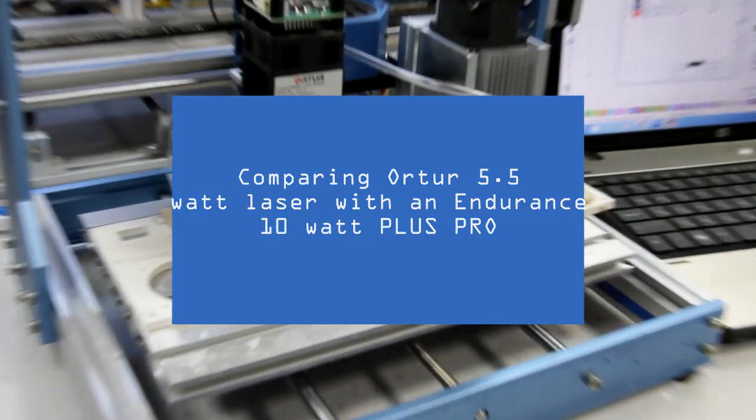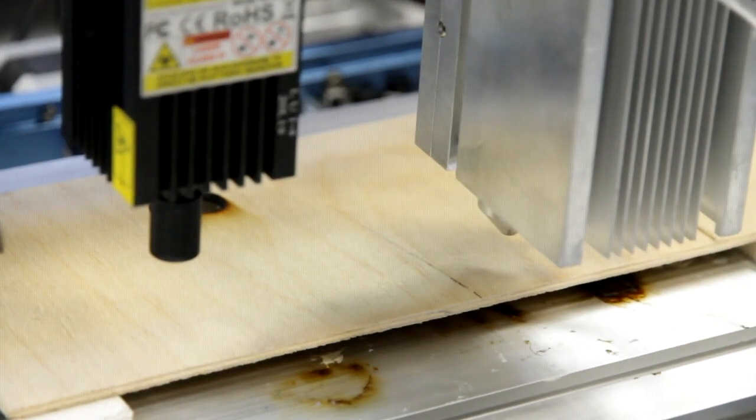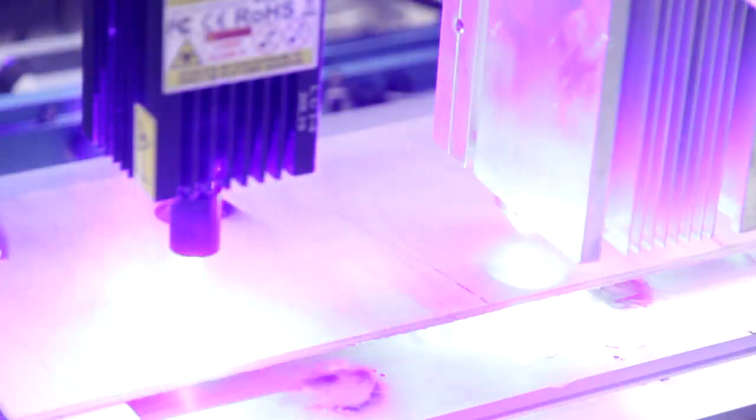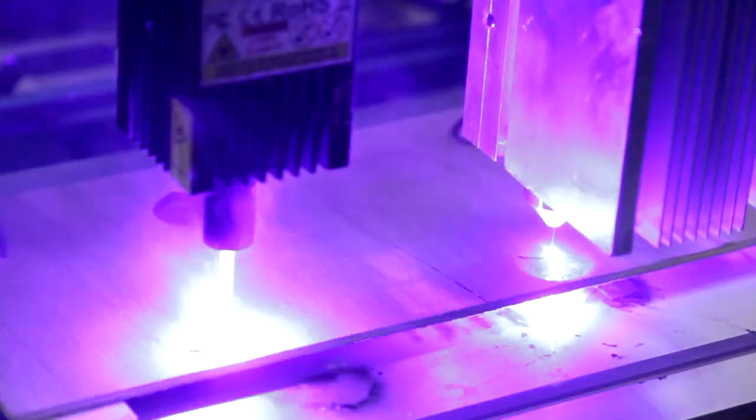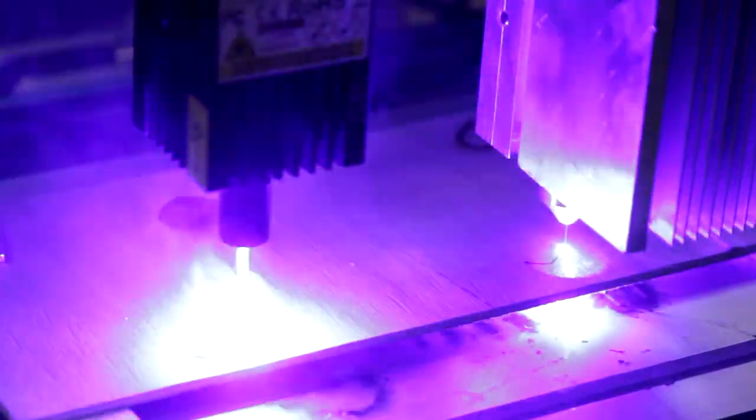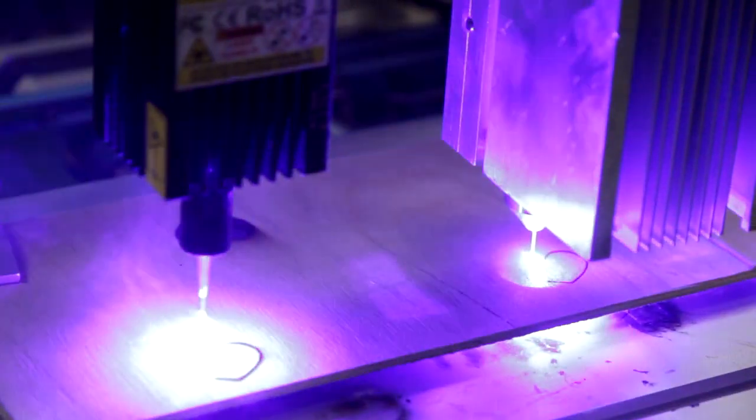Both lasers are installed on CNC-3018 frame by Seinsmart GenMitsu. The wiring is very easy and we showed it in our previous footage. We cut 3mm plywood at different speeds.